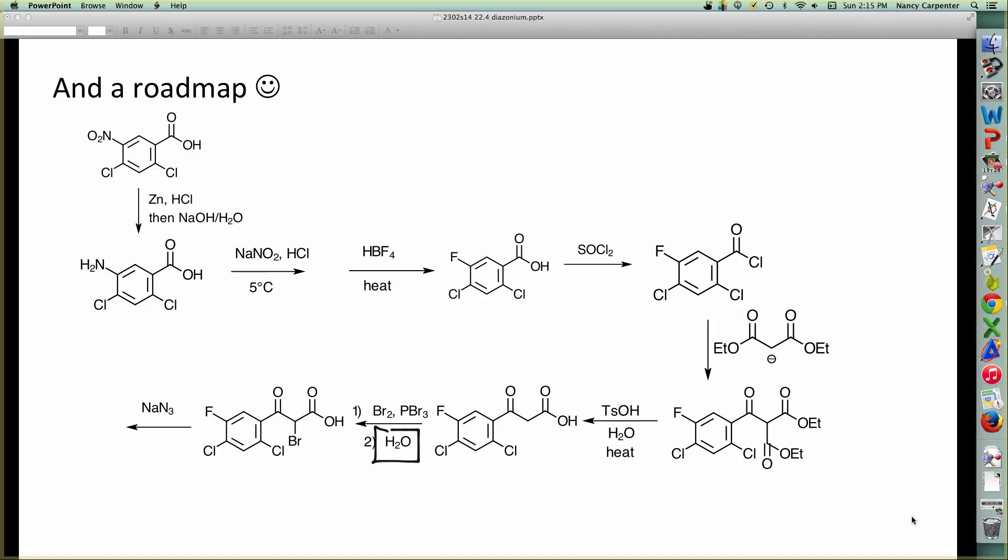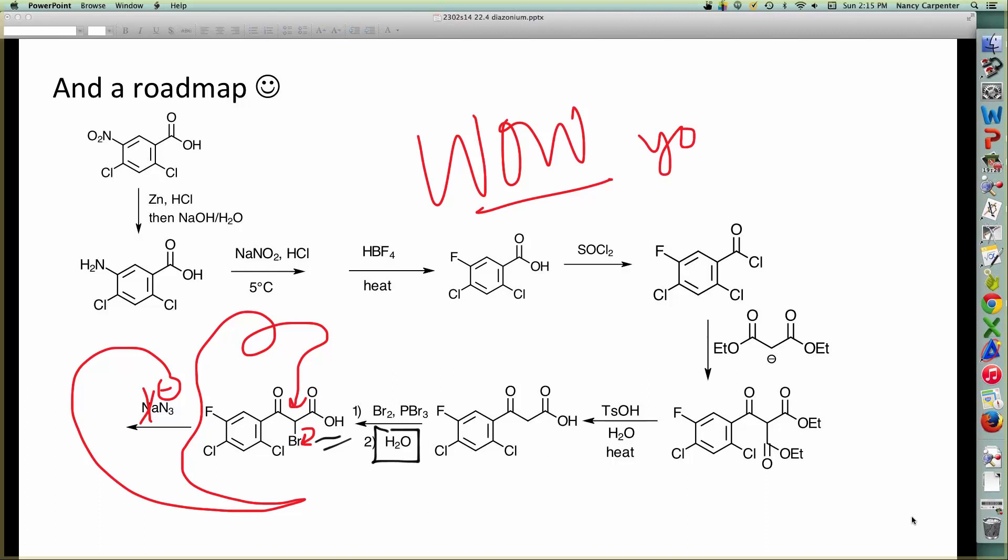And what did this allow me to do? It allowed me to carry out a legitimate SN2, displacing that bromide and putting the azide on the alpha methylene. Wow, you know a lot of organic chemistry. That's a good deal.